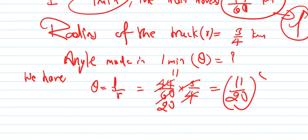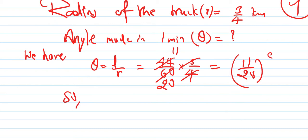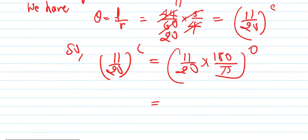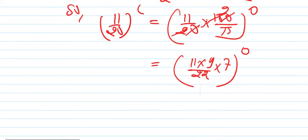Theta is 11 by 20 radian. To convert to degrees, multiply by 180 by pi. So 11 times 180 over 20 times pi, which is 11 times 9 over 22 by 7 degrees.